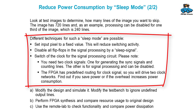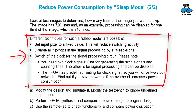Different techniques for a sleep mode are possible — try them out. They differ in design complexity and in the reduction of power consumption. The first option is setting the input pixels to a fixed value for those 240 lines — if you set them all to white, black, or grey you will have the same pixel for the complete line and no switching activity. The second option is to disable the flip-flops in the signal processing with a sleep or inactive signal. The third option is to completely switch off the clock for the signal processing circuit.